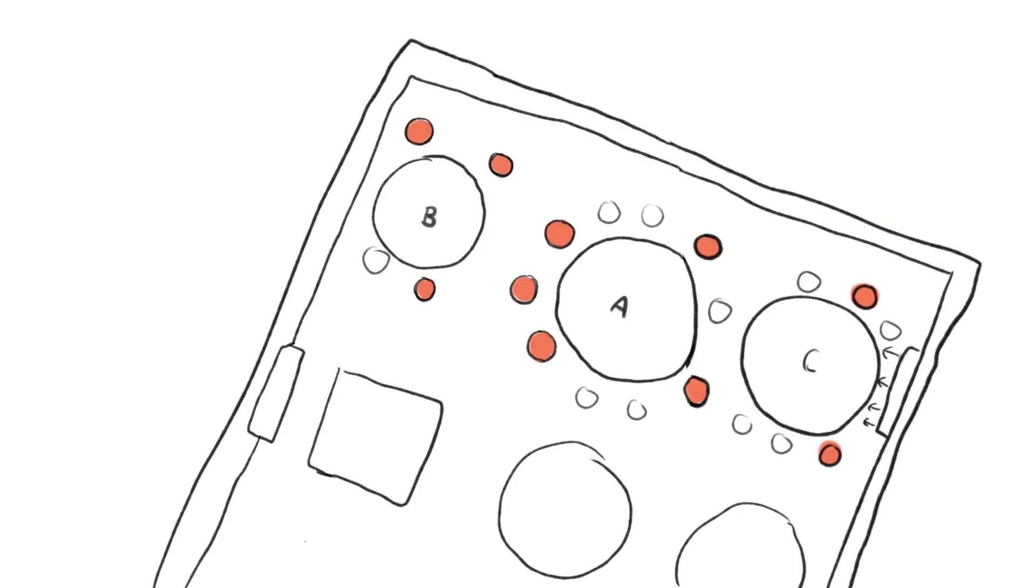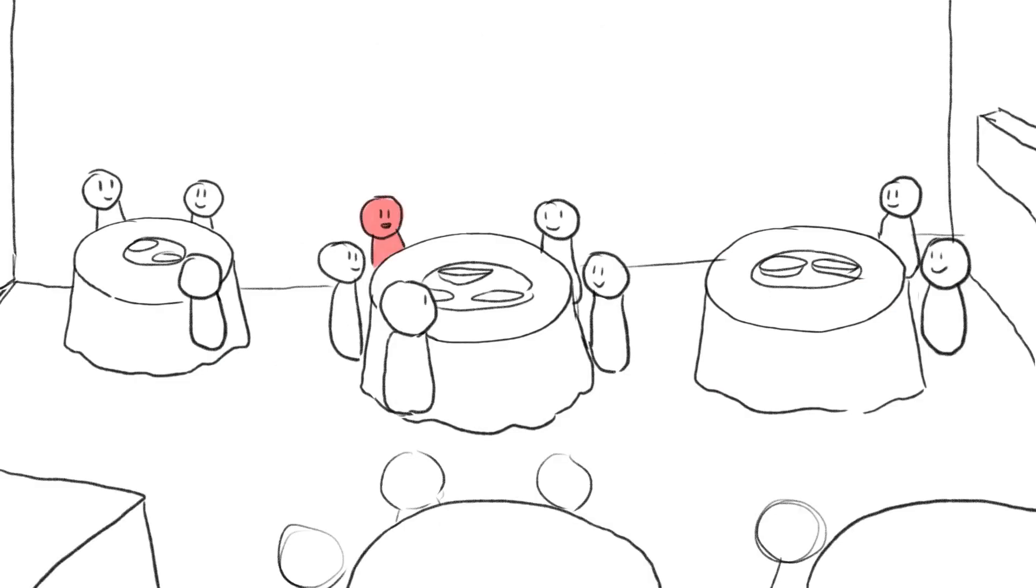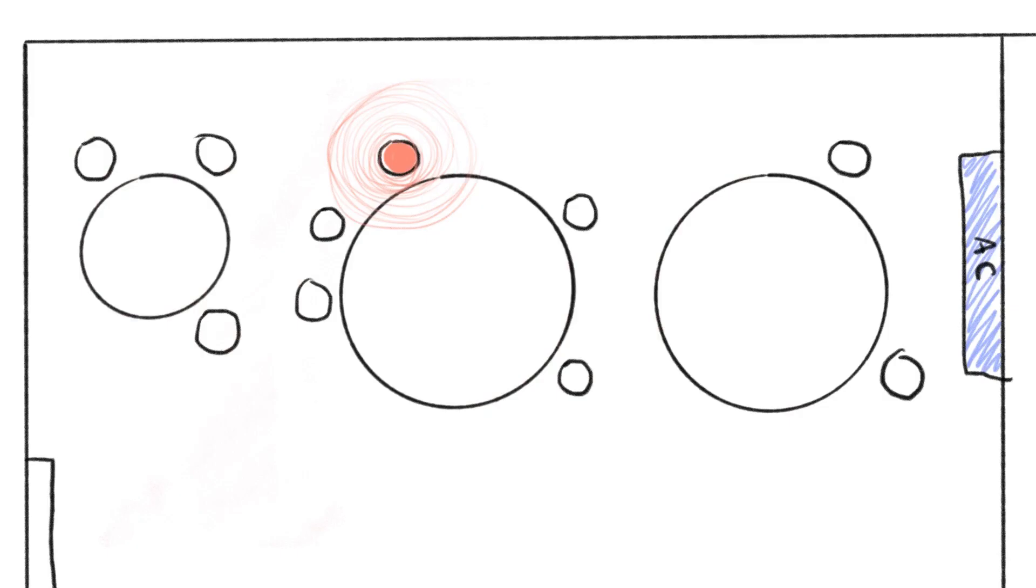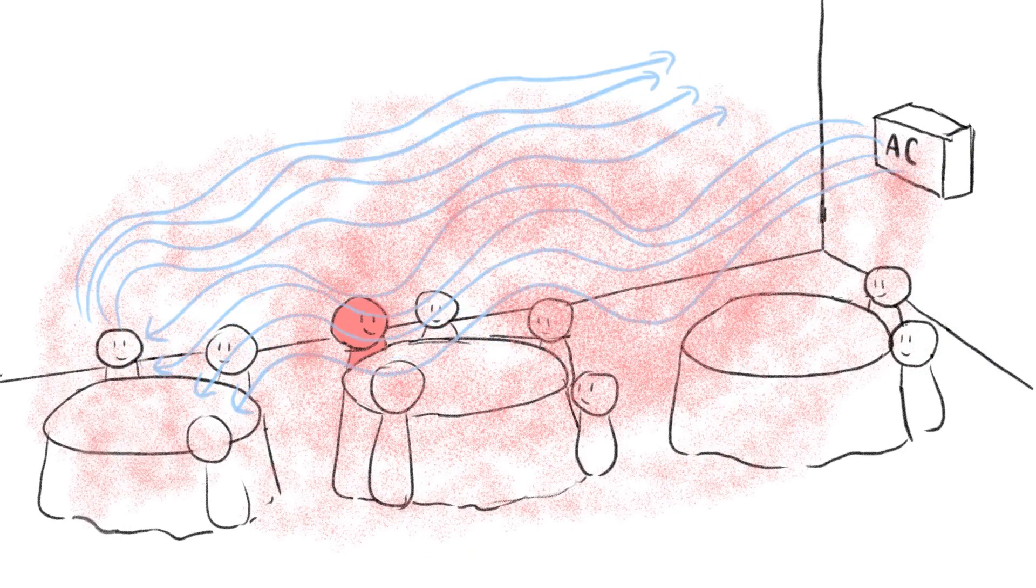In a case study described in the journal Emerging Infectious Diseases, there was an outbreak of COVID-19 on January 24, 2020, that started from a restaurant in China. An asymptomatic carrier sat here. They breathed continuously, which kept adding viral particles to the closed room. On one side of the wall, there was an air conditioner circulating the virus in this part of the restaurant.